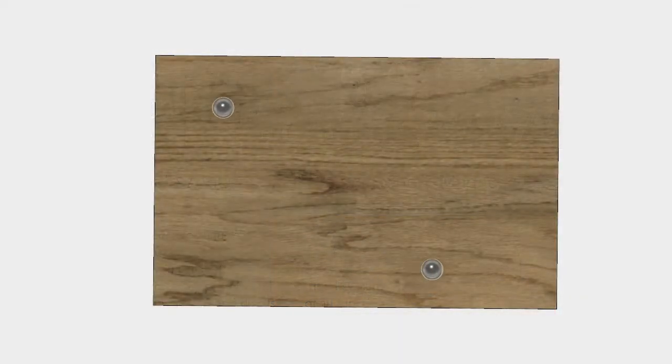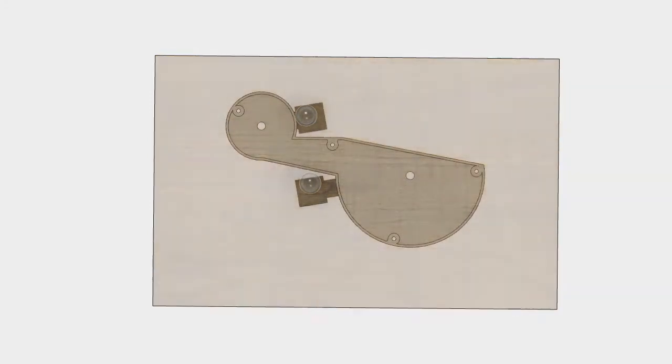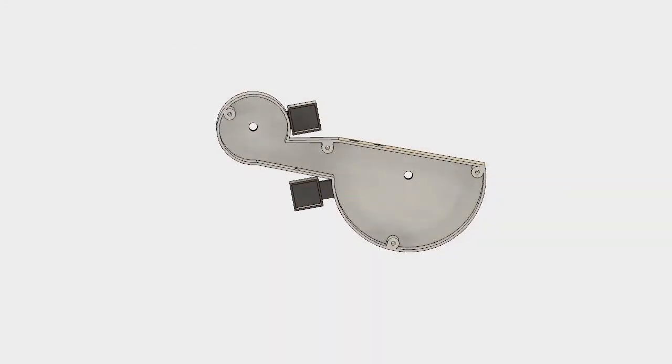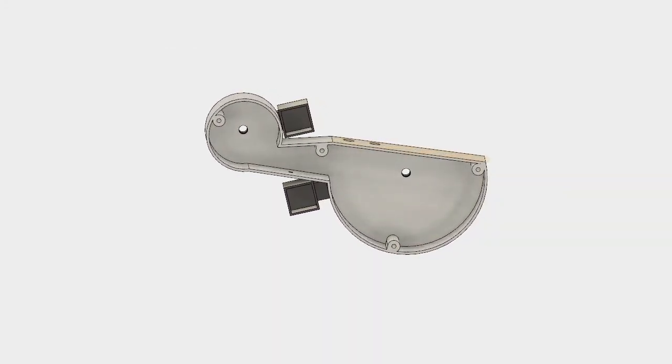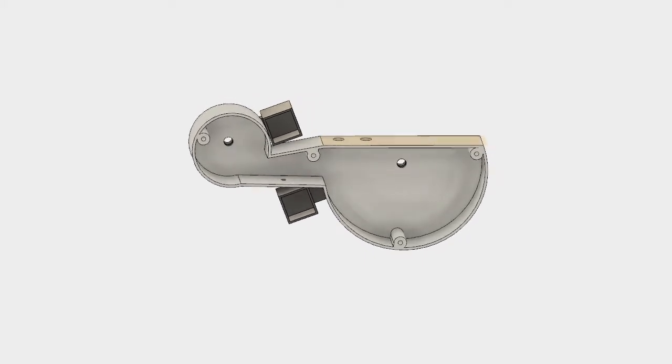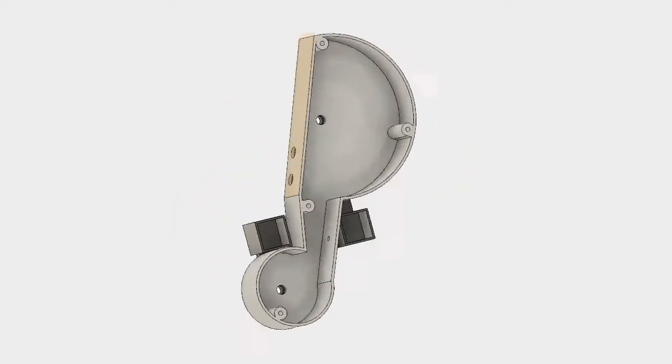The clock itself is designed to drag two magnetic balls on the surface of a piece of wood. One will indicate the minute and one will indicate the hour. They're moved along by two arms controlled by servos which house powerful magnets which will drag the balls on the other side of the piece of wood.